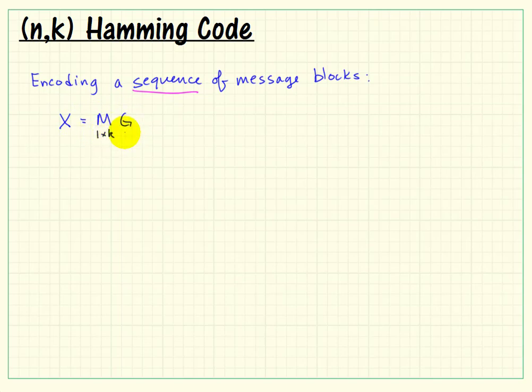What happens if you're imagining you're doing a big stream of messages? We can simply promote our M vector into a matrix. If we had a 1 by K for a single message, let's make that some arbitrary vertical length W for the number of message words. If that's a W by K matrix, the G matrix is the same, and that produces what we need.